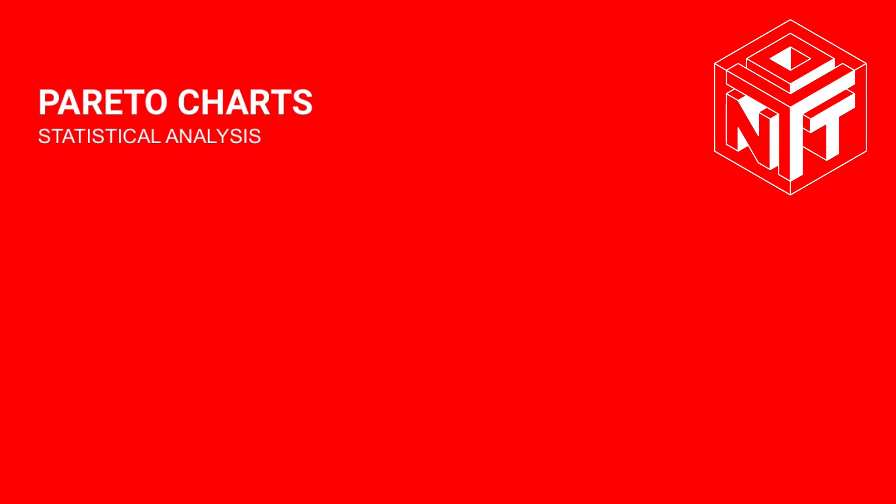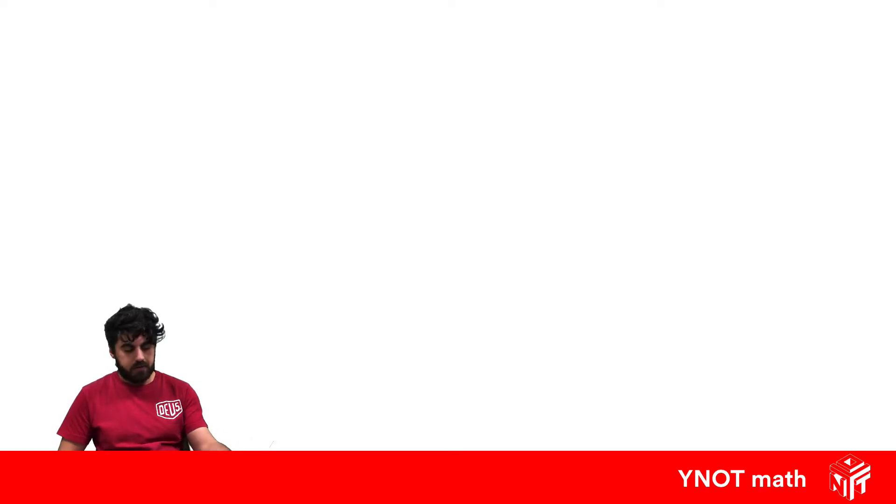Pareto Charts. So a Pareto chart is what we can use to distinguish the important things out of some data and disregard maybe some things that are just common amongst all the data. We're going to do this by creating a combination of a bar graph and a line graph.